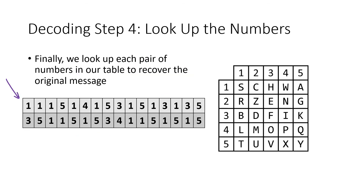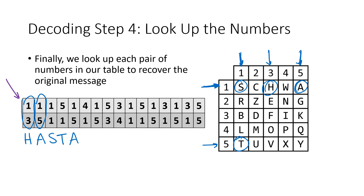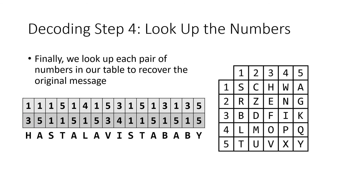Looking up the pairs: the first pair is 1,3 — row one, column three — which is H. Then 1,5 is A. Then 1,1 is S. Then 5,1 is T. Then row one, column five is A again. If you're a fan of Schwarzenegger movies, you probably already know where this is going — and indeed the decoded message is 'hasta la vista, baby.' We can restore the spaces because we can read and understand the message.